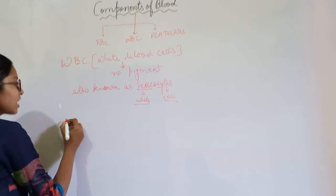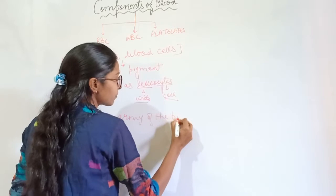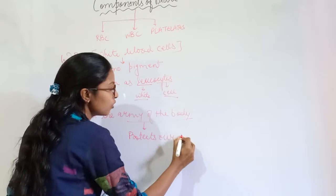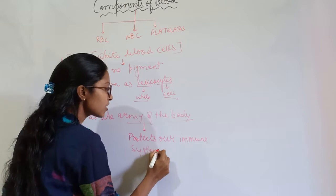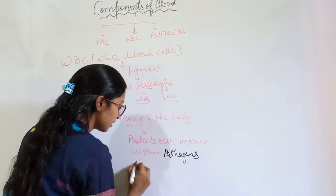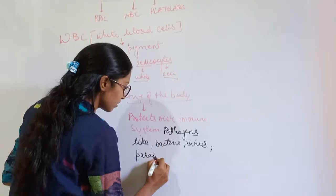WBCs are considered as the army of the body because they protect our immune system from various pathogens like bacteria, viruses, parasites, germs, etc.